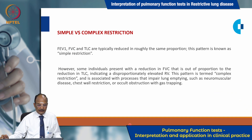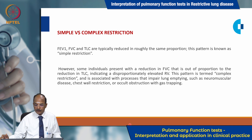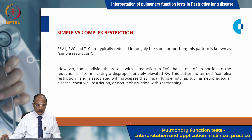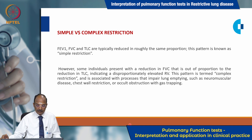What is complex restriction? FEV1/FVC and TLC are typically reduced in roughly the same proportion — this pattern is known as simple restriction. However, some individuals present with a reduction in FVC that is out of proportion to the reduction in total lung capacity, indicating a disproportionately elevated residual volume. This pattern is termed complex restriction and is associated with processes that impair lung emptying, such as neuromuscular disease, chest wall restriction, or occult obstruction with gas trapping.